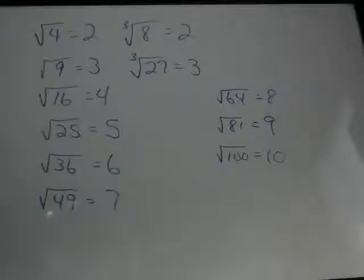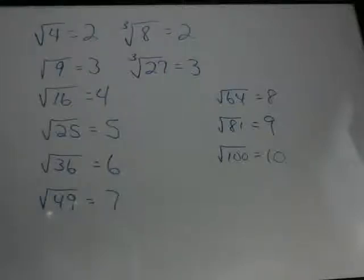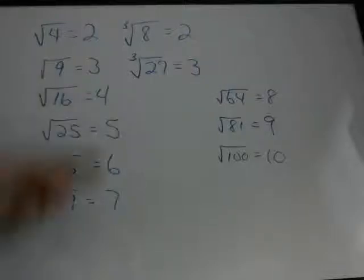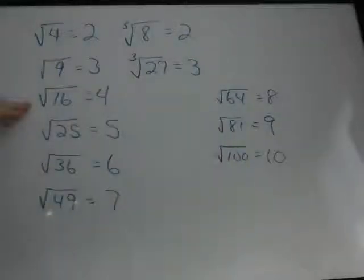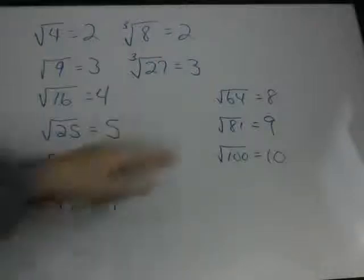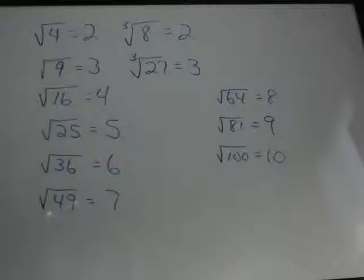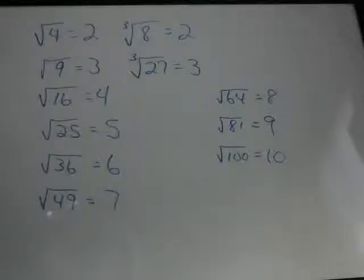The roots I've written on the board here, I'd like you to copy these down — these are roots you should have memorized. The square root of 4 is 2 because 2 times 2 is 4. The cubed root of 8 is 2 because 2 times 2 times 2 is 8. The square root of 9 is 3. The cubed root of 27 is 3. You should also know the square roots of 16, 25, 36, 49, 64, 81, and 100. You should be able to instantly recognize, for example, that the cubed root of 64 is 8 because 8 times 8 is 64.